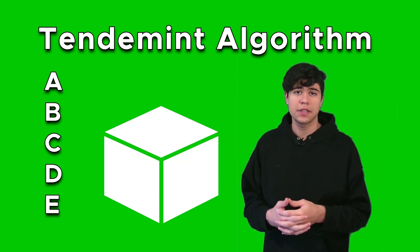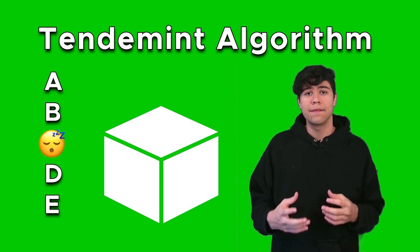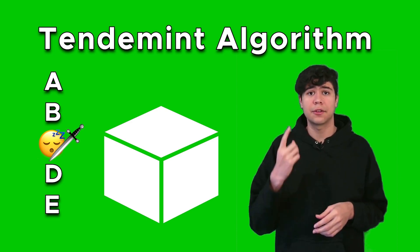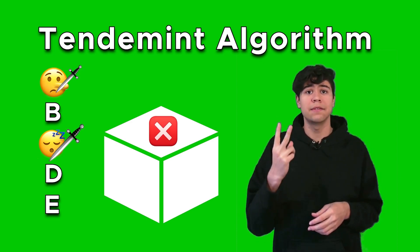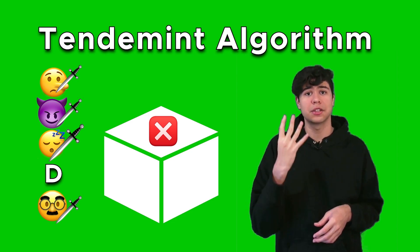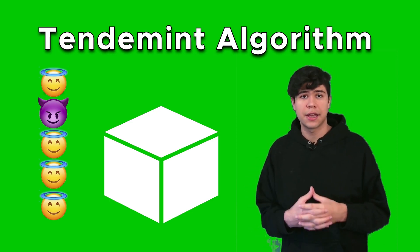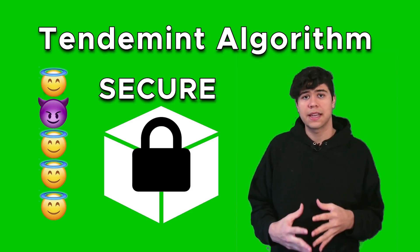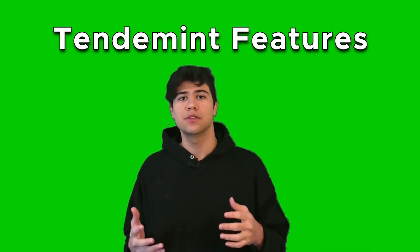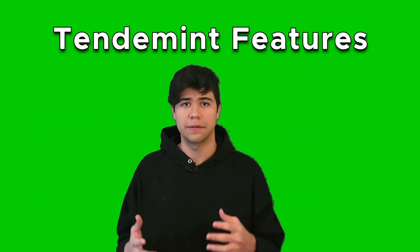Using Tendermint in a proof-of-stake network, validators get rewarded if they pass valid blocks, and get penalized by slashing their stake if they're offline, vote for an invalid block, propose an invalid block, or try to partition the network and fork. With Tendermint, as long as over two-thirds of the validator set are honest, Byzantine faults and invalid state transitions won't happen.